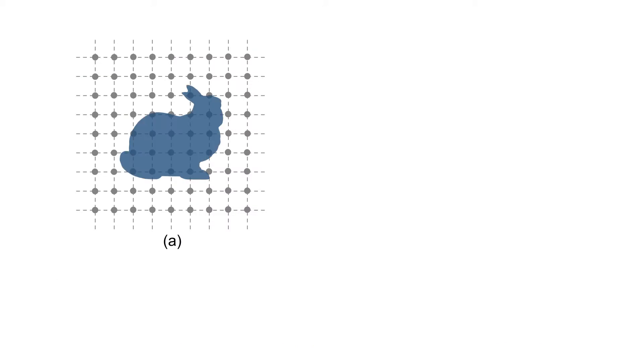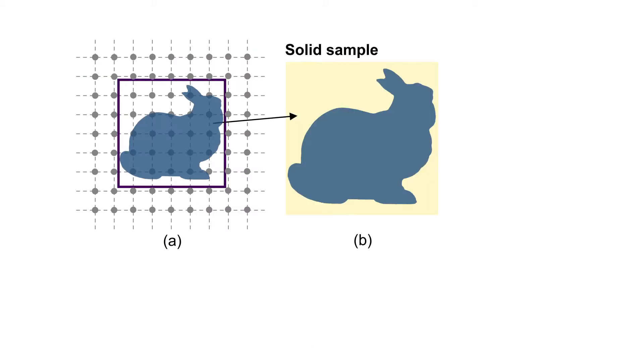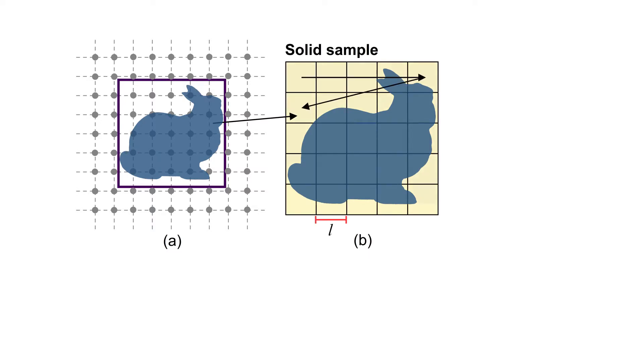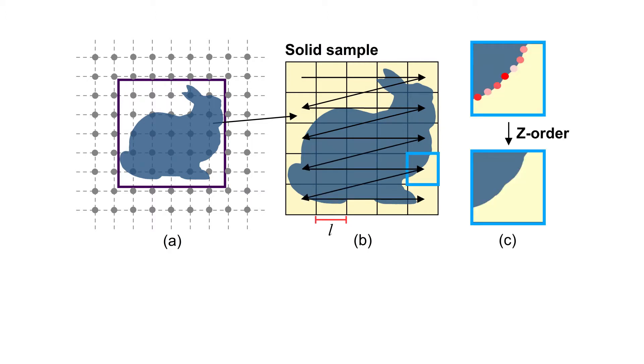We propose a block-based data layout for solid samples, where we first find the bounding box of the solid, which is then divided into subdomains of equal length L. These subdomains are stored in the order of fluid nodes, and within each subdomain, the solid samples are sorted by Z ordering.